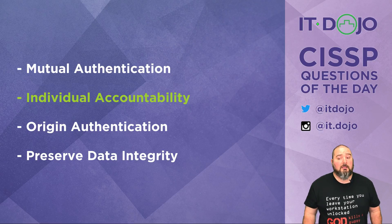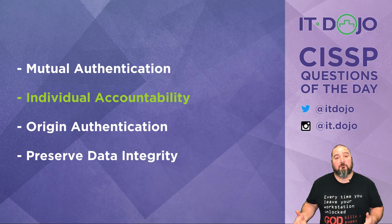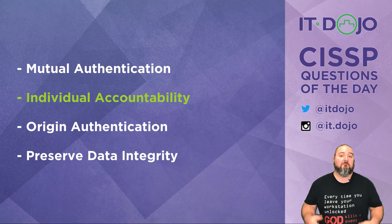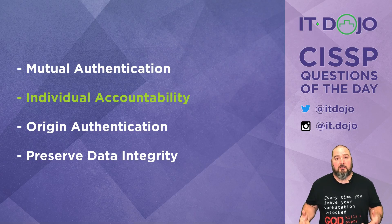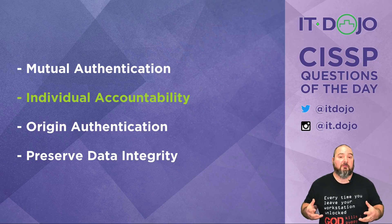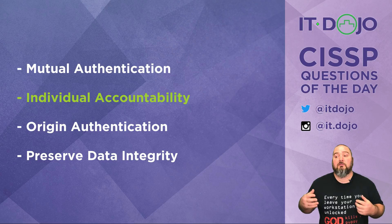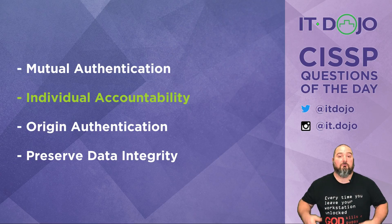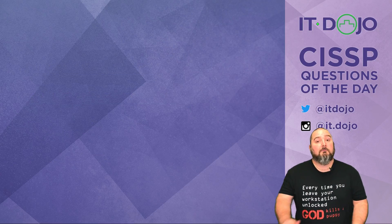So again, the best answer here is individual accountability and non-repudiation — the idea that there is a record of the things that people or systems do, and therefore we can hold them to account because we have a record of what was done.